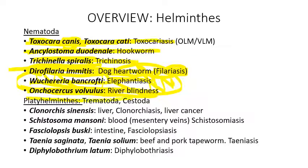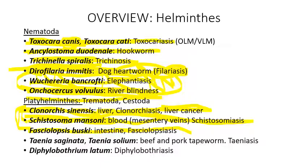Moving on to platyhelminths: trematodes versus cestodes. Clonorchis sinensis is known as the liver fluke — it's a trematode and can cause liver cancer. Schistosoma mansoni is known as a blood fluke, also a trematode, and causes schistosomiasis. Fasciolopsis buski infects the intestines and causes fasciolopsiasis. Those are the main flukes — the trematodes — that we're going to learn about.